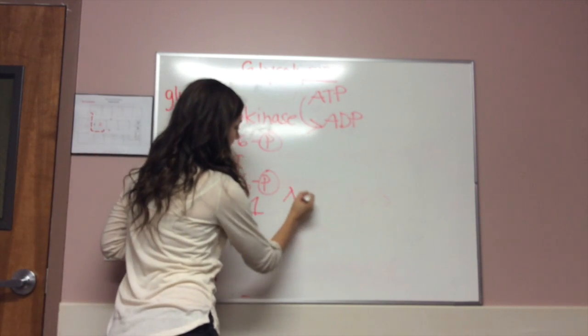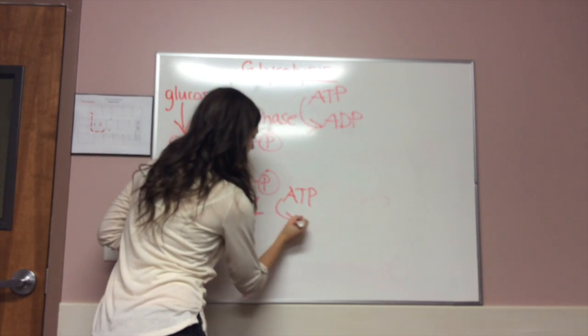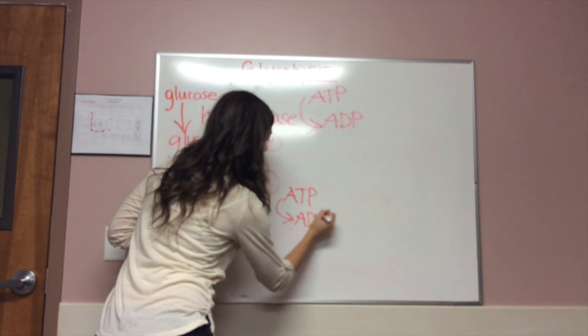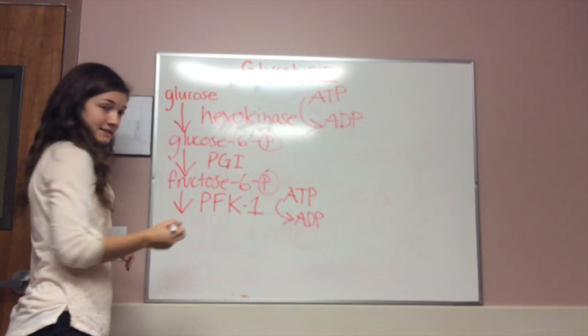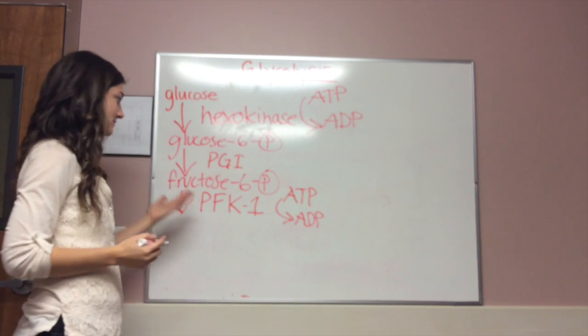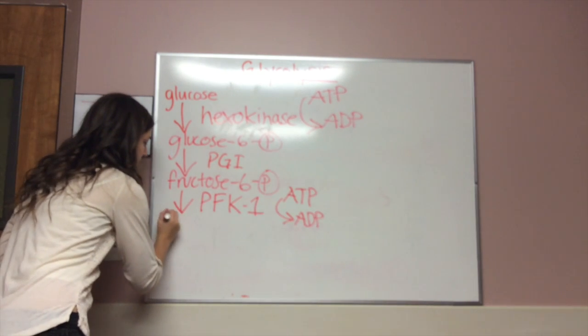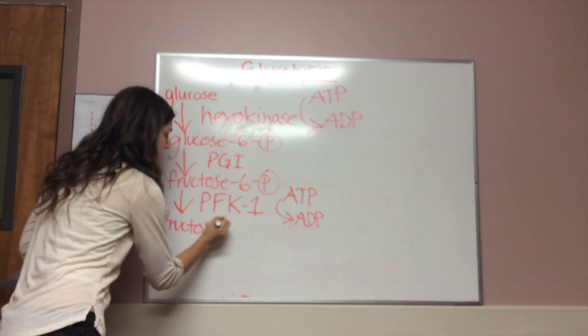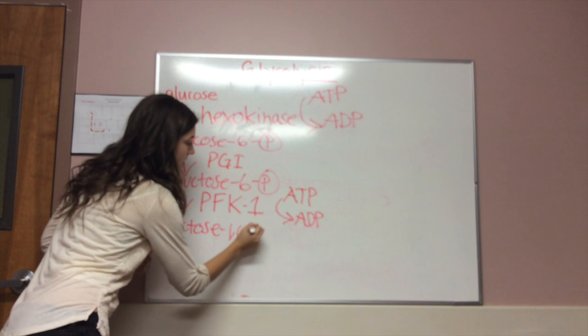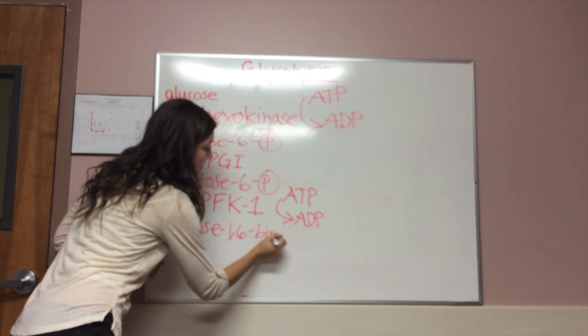It also takes the phosphate off of ATP and adds it to the first carbon of fructose, giving us fructose 1,6-bisphosphate.